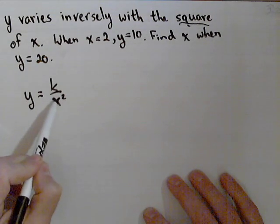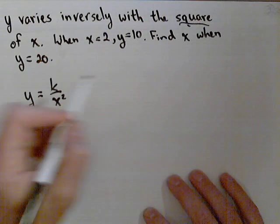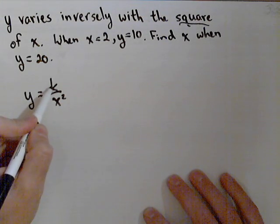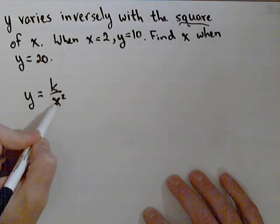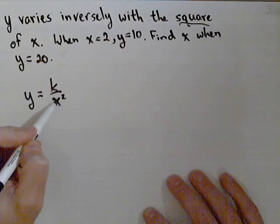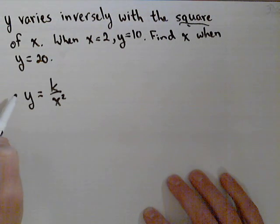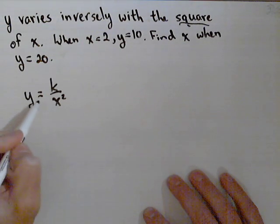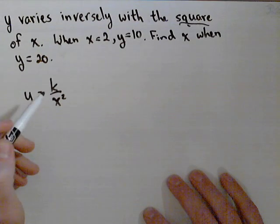Okay, this is inverse variation, so k is still our constant of proportionality as always. Because it's inversely proportional, the x actually goes on bottom, and it was the square of x, so it's x squared. So what happens now is as x increases, y actually decreases. There's an inverse relationship between the variables, hence the name.